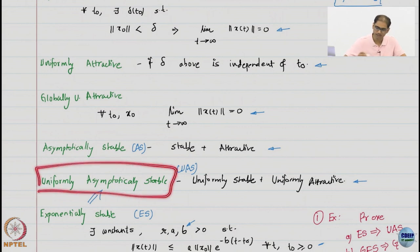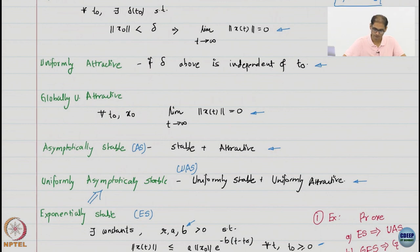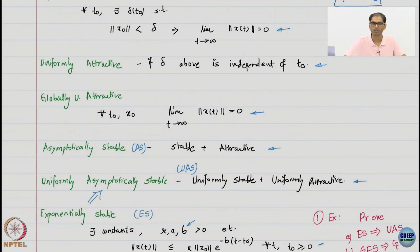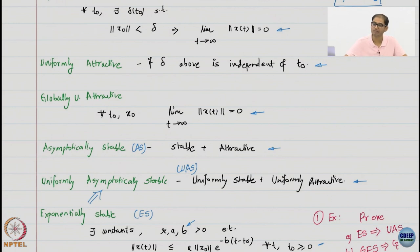Then we have uniform asymptotic stability. Here I qualify each property with uniformity: I need uniform stability and uniform attractivity. This is a pretty strong property — in fact, one of the strongest properties you can have for nonlinear systems, and more often than not this is where you stop.